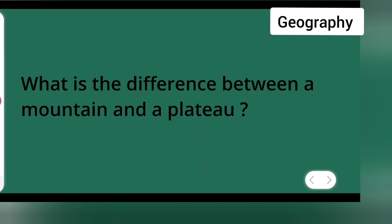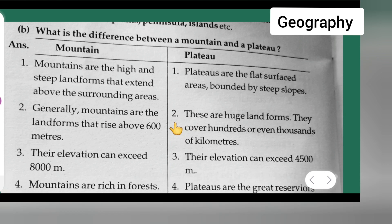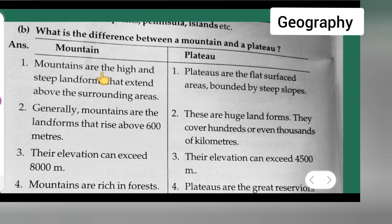Today's question is taken from Class 6 Geography. The question is: what is the difference between a mountain and a plateau? First point under mountain: mountains are the high and steep landforms that extend above the surrounding area. First point under plateau: plateaus are the flat-surfaced area bounded by steep slopes.